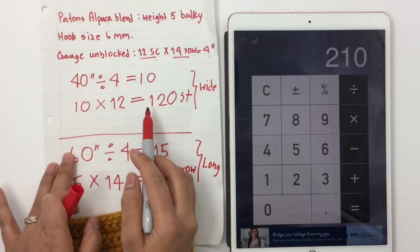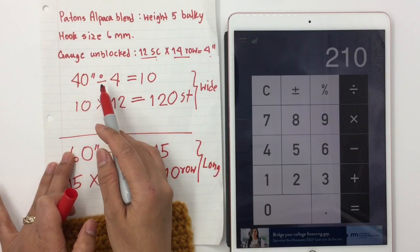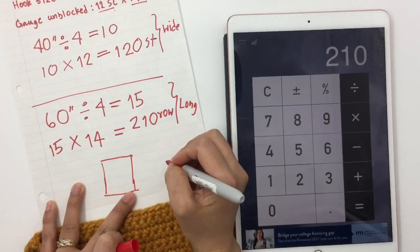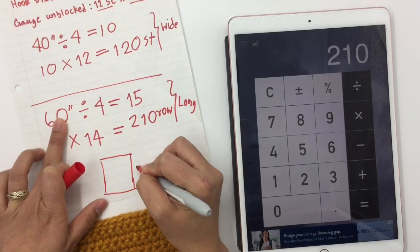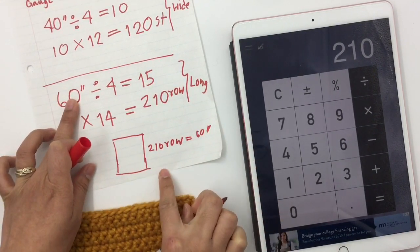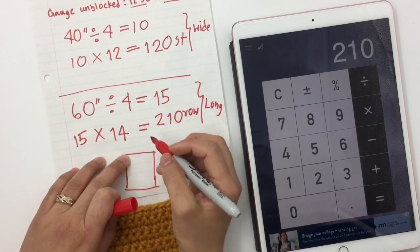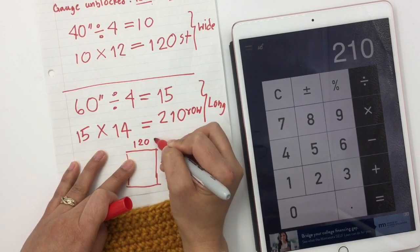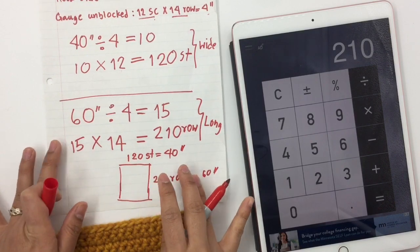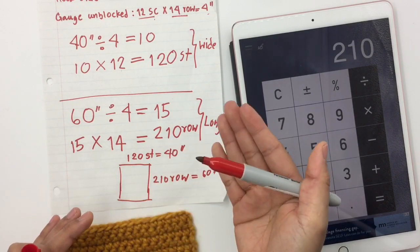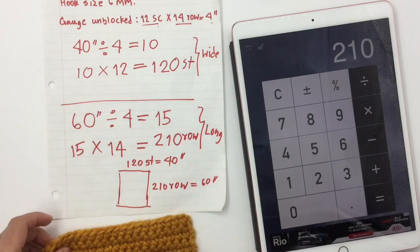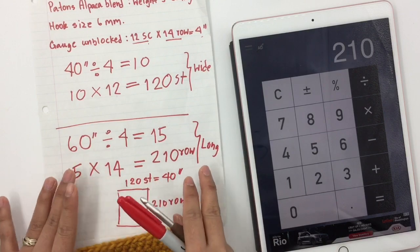So to summarize: I need to make 120 stitches to have 40 inches wide, and I need to make 210 rows to have 60 inches long. That's my blanket — 210 rows equals 60 inches, and 120 stitches equals 40 inches. That's how I do mine. If you have a different way, go ahead and do it your way. I hope it makes sense!